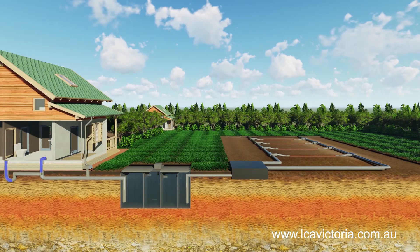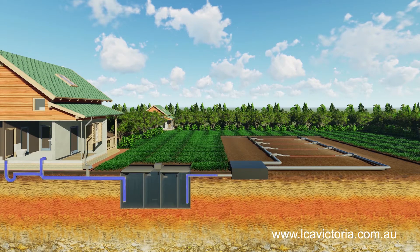State Environment Protection Policy, Waters of Victoria, requires that all wastewater is contained on the site that has produced the wastewater. Our goal with an on-site wastewater treatment system is to dispose or reuse treated wastewater via deep seepage and evapotranspiration.